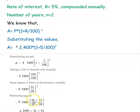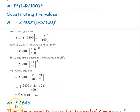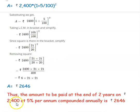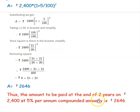Removing the square, we substitute 21 into 21 divided by 20 into 20. Simplifying this gives the answer of Rs. 2,646. So that is the amount to be paid at the end of 2 years on Rs. 2,400 at 5% per annum compounded annually: Rs. 2,646.